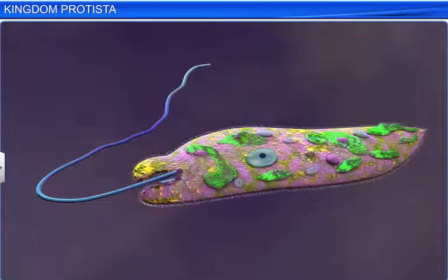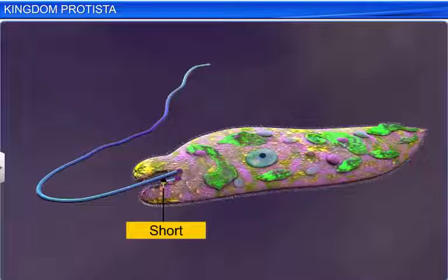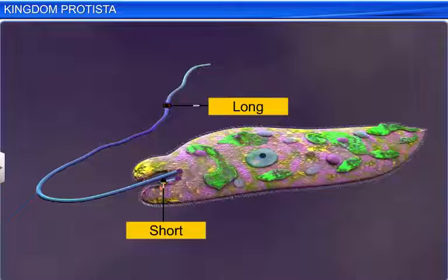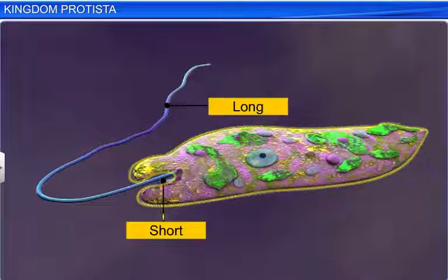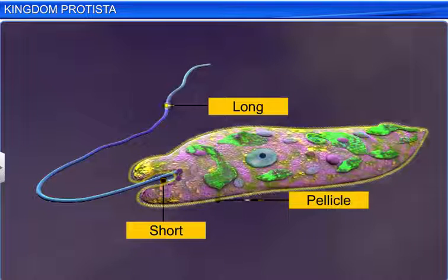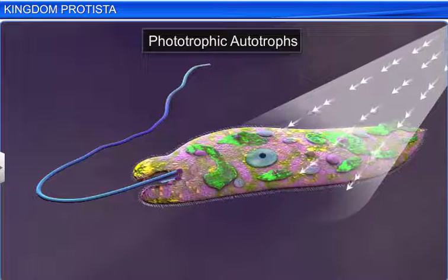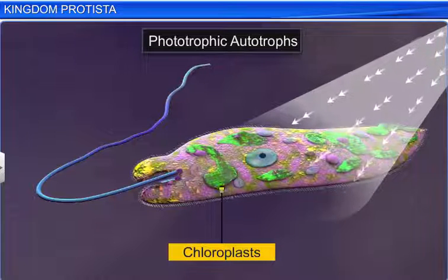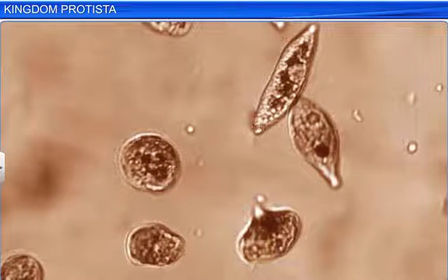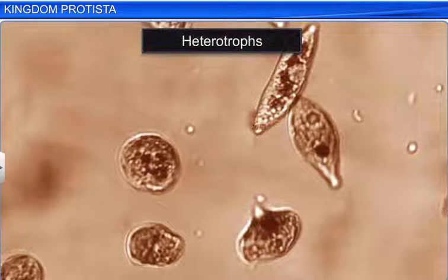Euglenoids too, like Dinoflagellates, have two flagella — one short and the other a long one. Instead of a cell wall, Euglenoids have a protein-rich layer called pellicle, that makes their bodies flexible. Euglenoids are phototrophic autotrophs in the presence of sunlight, since they also have chloroplasts like plants. However, they behave as heterotrophs in the absence of sunlight.